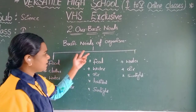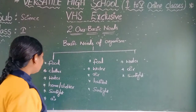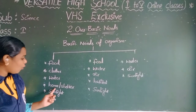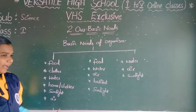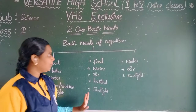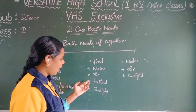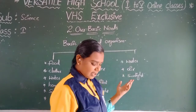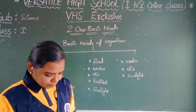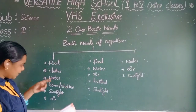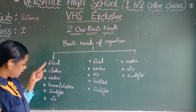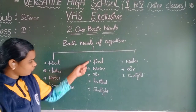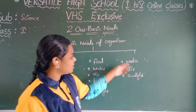This is the basic needs of organisms. So: food, clothes, water, home and shelter, sunlight, and air — these are the main basic needs. Water, air, and sunlight are needed for humans. These are for animals and these are for plants.